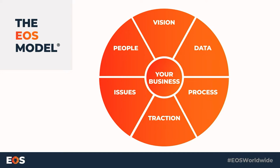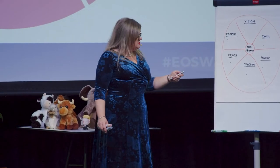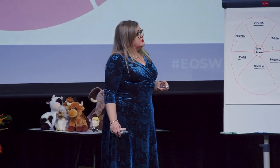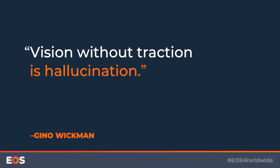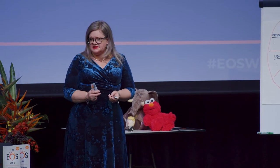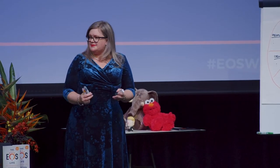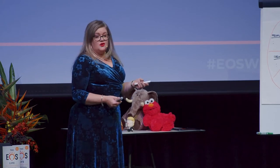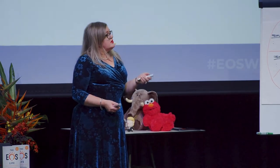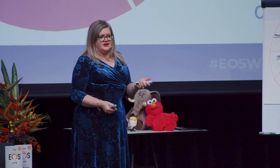Gino always says: vision without traction is hallucination. We all have a clear understanding of where we want to go and what we want to do, but if we cannot clearly articulate it and get all our people on the same page, rowing in the same direction, then we're not going to get there. So the first part we have to look at is how do we actually make sure we have got that vision sorted.